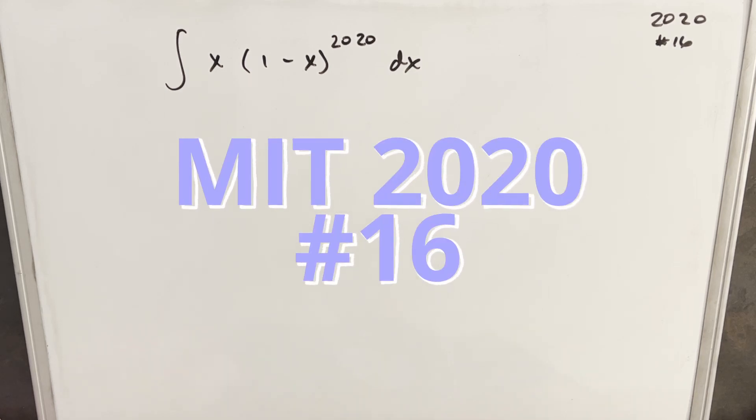Hey, welcome back. I thought we'd try another integral today. This one from MIT 2020, problem number 16. We have the integral x times 1 minus x to the 2020 dx.